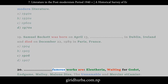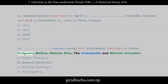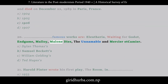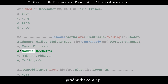Question 20: Eleutheria, Waiting for Godot, Endgame, Malloy, Malone Dies, The Unnamable, and Messier at Cameo are the famous works of: A. Dylan Thomas. B. Samuel Beckett. C. William Golding. D. Ted Hughes.